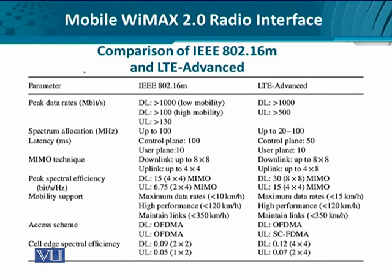When it comes to MIMO techniques, the downlink is 8×8, meaning 8 antennas transmitting and 8 receiving simultaneously. On the uplink — the mobile side — it can be 4×4. In LTE-A, it is again 8×8 on the downlink and 4×8 on the uplink.